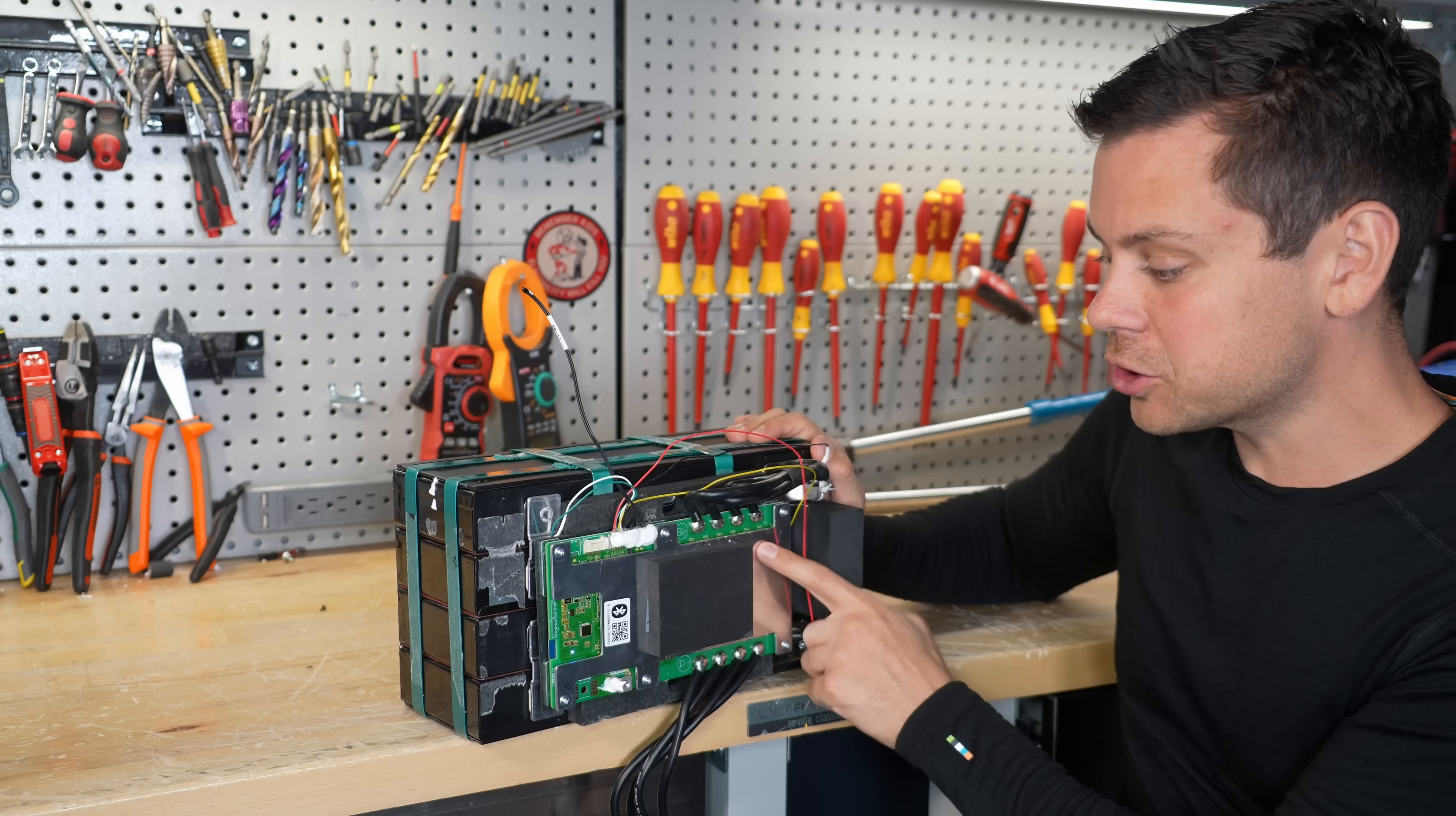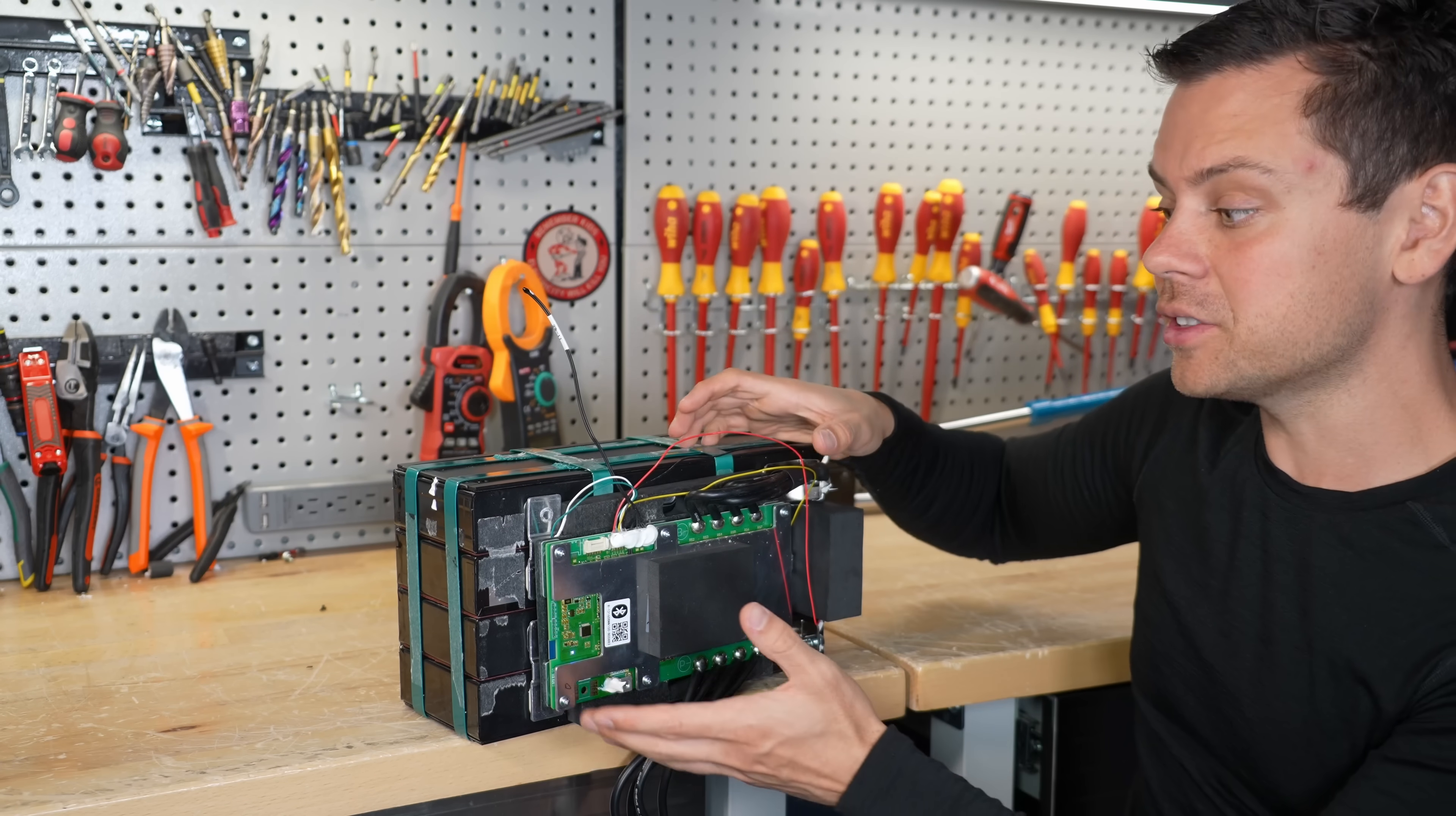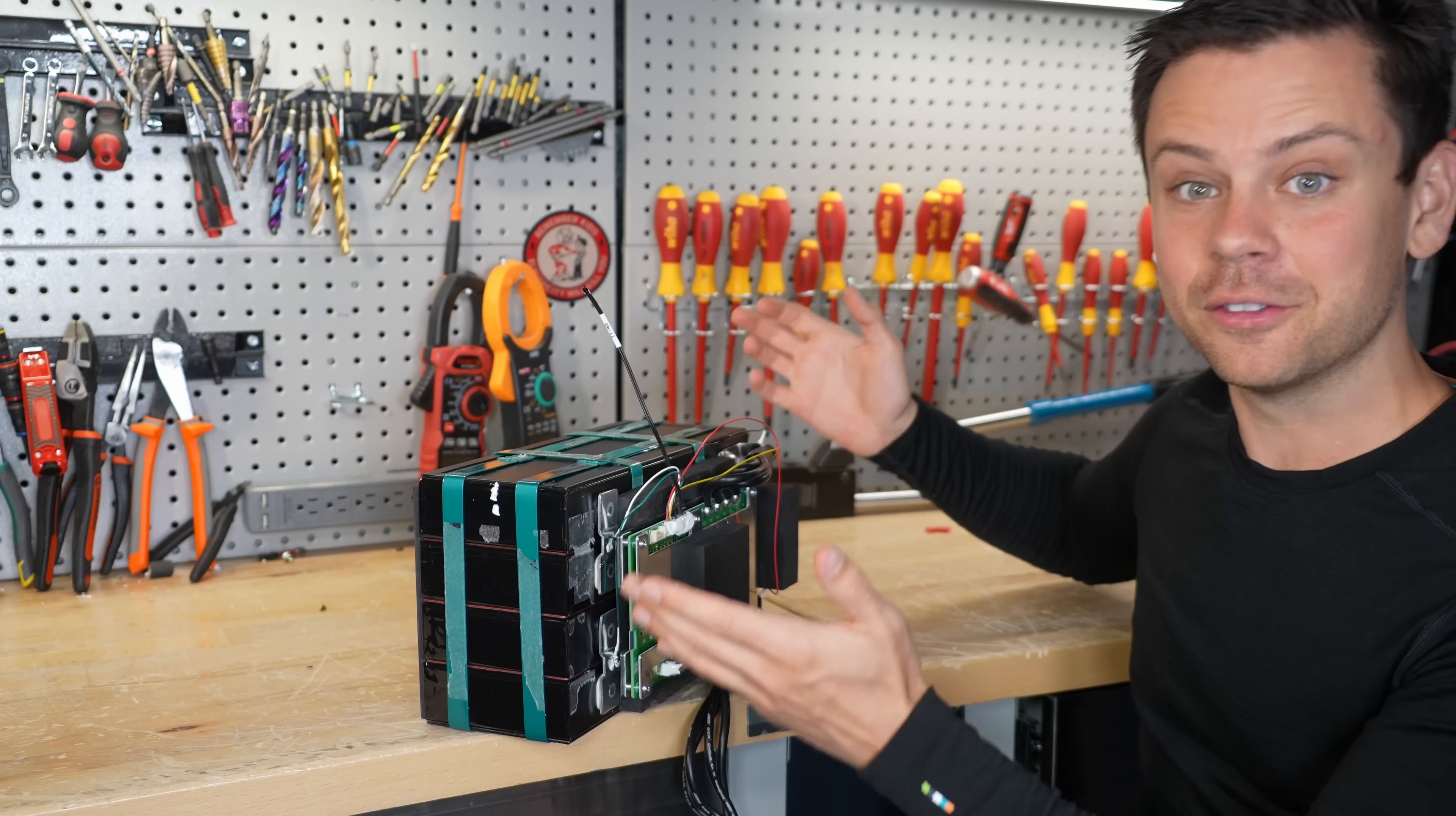If the electronic switches in this BMS or the MOSFETs were to fail in a closed position, this BMS cannot do its job to disconnect chargers and these cells can get overcharged. And if this was any other chemistry in that situation, you're going to have a fire.